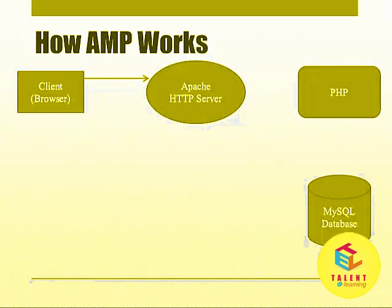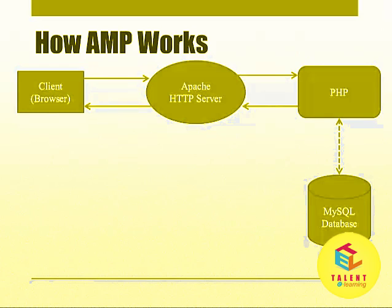Let's recap: you send the request to the server. It looks for the requested resource. Then PHP directly responds to the HTTP server, or it looks for the information in the database and then responds to the server. Then the server prepares the response and sends it back to the browser, and hence you see a webpage. This is how AMP works.